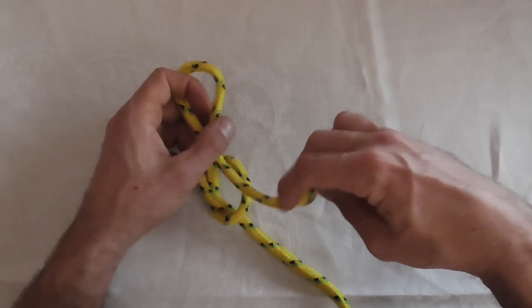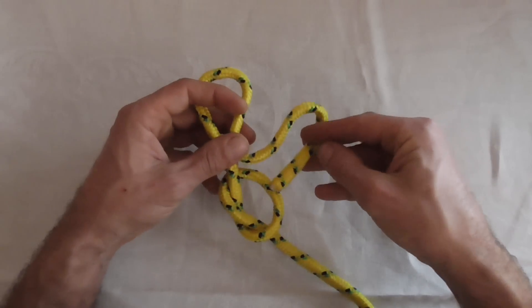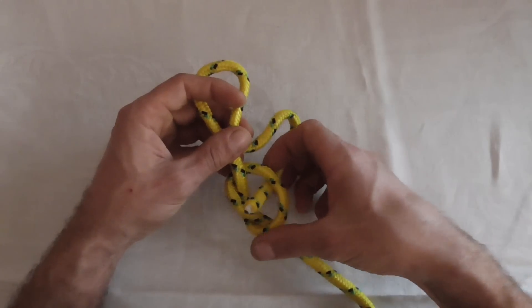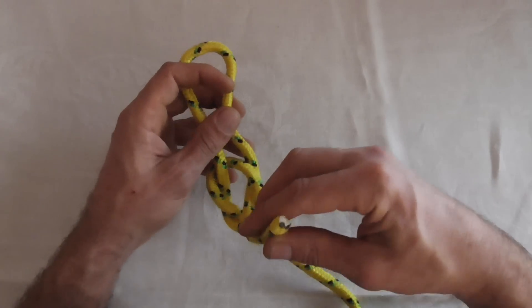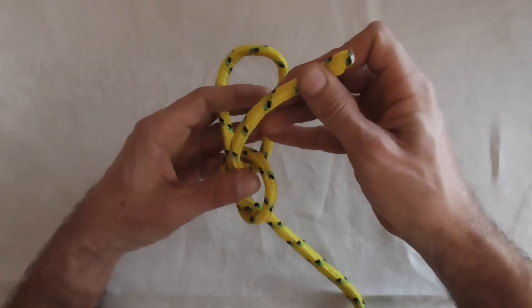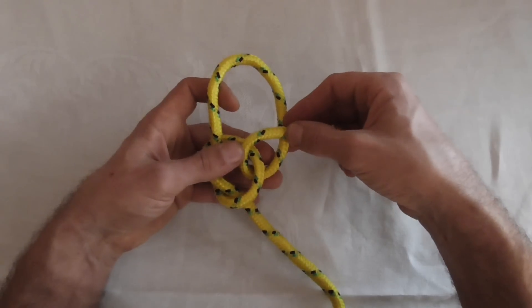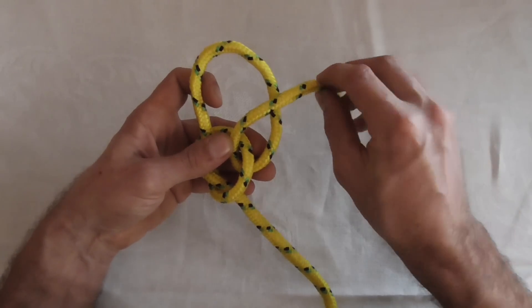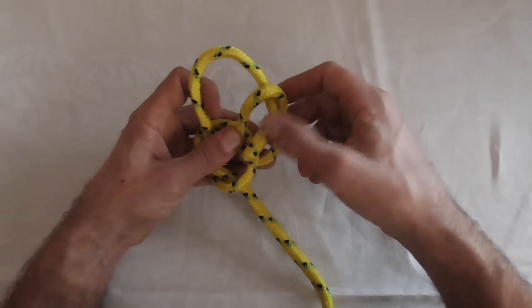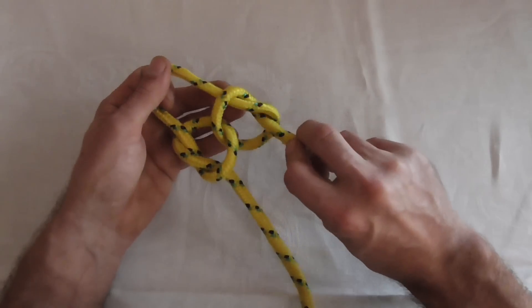We are going to take the end, tuck it up through our original knot, and then we are going to form another overhand loop and then we are going to tuck our working end through there to make another overhand knot.